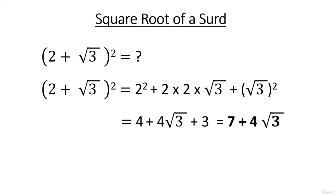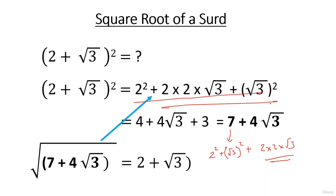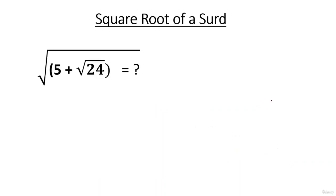So if I ask you: what is the square root of 7 plus 4√3? You should recognize the pattern a² + 2ab + b². Whenever we are asked to find the square root of a surd, we should visualize that expression as a² + 2ab + b². So for √(7+4√3), you visualize it as 2² + (√3)² + 2×2×√3. We'll apply the same logic in upcoming questions.